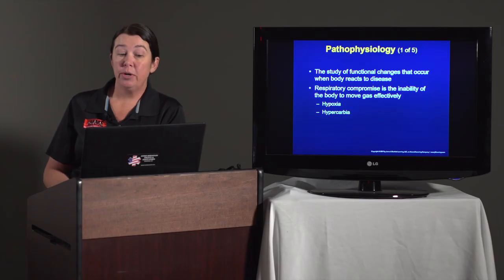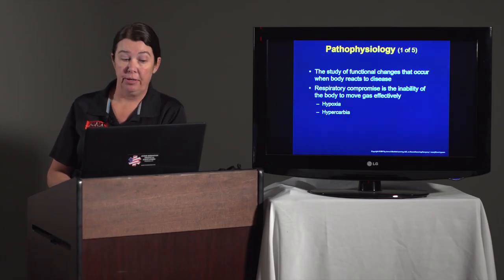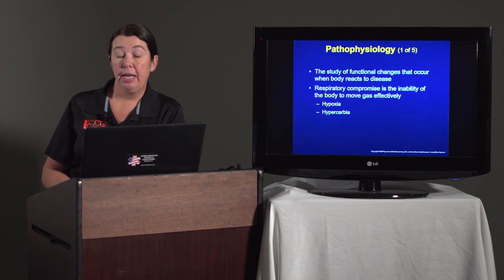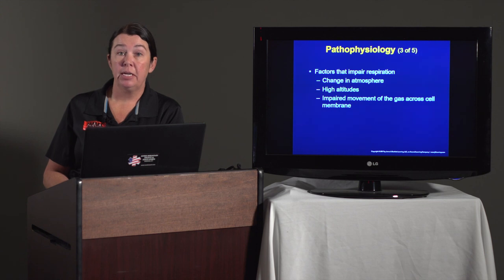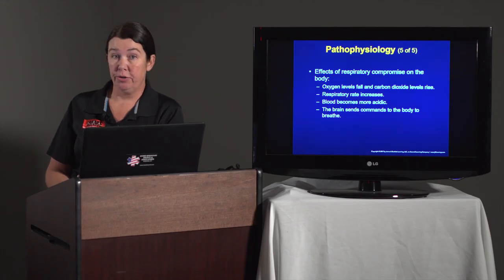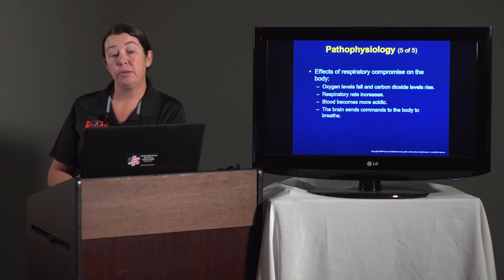Pathophysiology is the study of functional changes that occur when the body reacts to disease. Respiratory compromise is the ability of the body to move gases effectively. We'll go over what hypoxia and hypercarbia are later in the chapters. Factors that can impair ventilation include a blocked airway, impairment of the muscles of breathing, airway obstructed physiologically such as asthma, and other factors. Factors that can impair respiration include changes in the atmosphere, high altitudes, and impaired movement of gas across your cellular membrane. The effects of respiratory compromise on the body include oxygen levels start to fall and carbon dioxide levels increase. Respiratory rate increases to try to compensate, the body becomes more acidic, and the brain sends commands to the body to breathe.